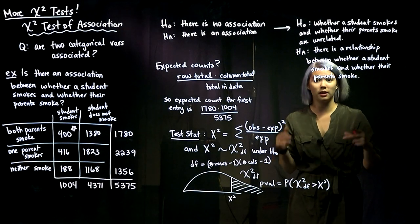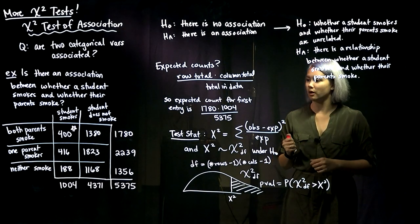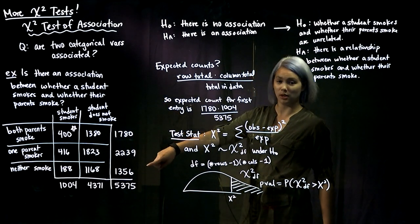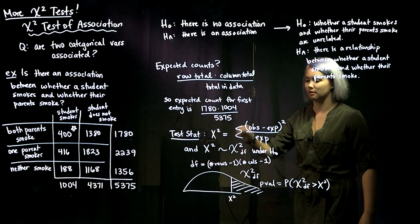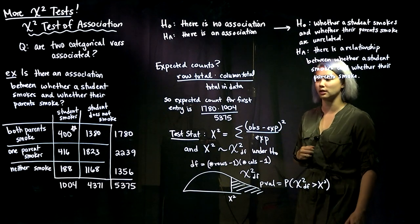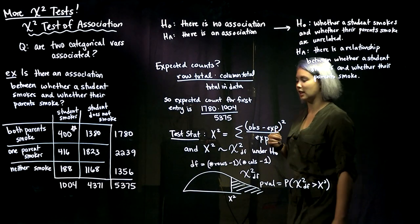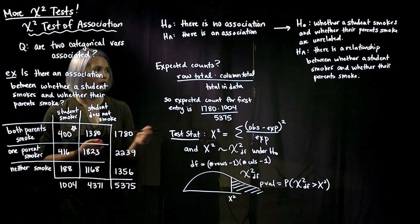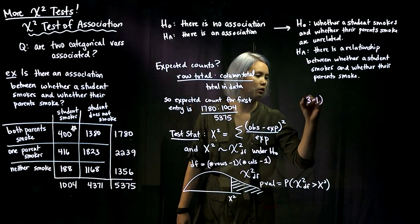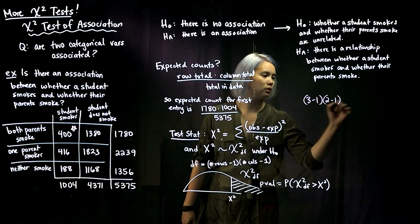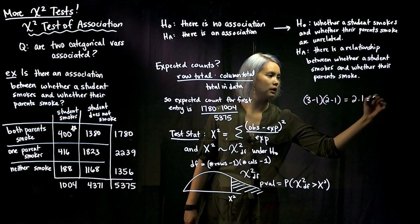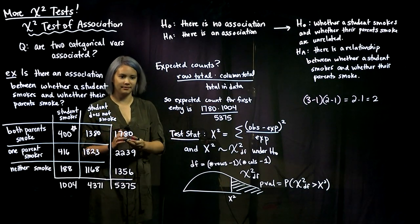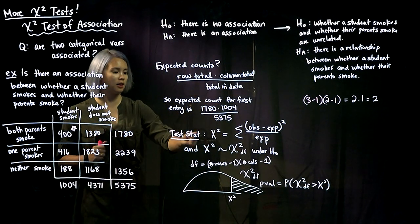Here, we're going to take the number of rows minus one times the number of columns minus one — that gives our degrees of freedom. In this example we have three rows and two columns, so we have (3−1) × (2−1) = two degrees of freedom.